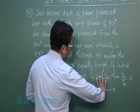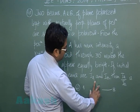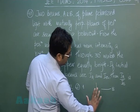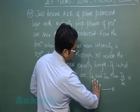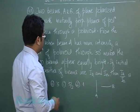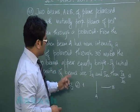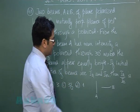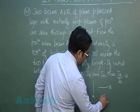A rotation of the polaroid through 30 degrees makes the two beams appear equally bright. So for the first situation, you get the transmitted beam through the polaroid.